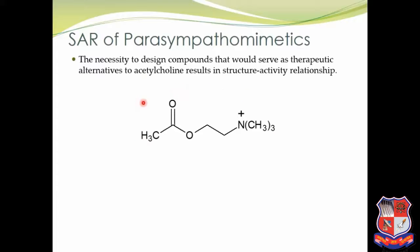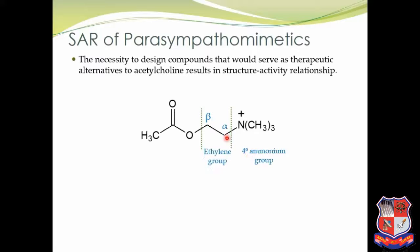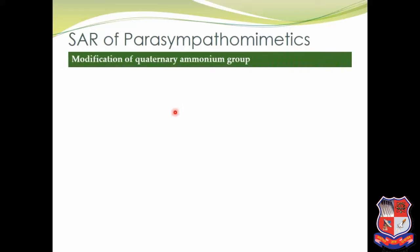This is the structure of Acetylcholine. For understanding the SAR, we will divide the structure of Acetylcholine into three parts. First, we will assign alpha and beta carbons. The first part is the quaternary ammonium group. The next part is CH2CH2, that is called the ethylene group. And the third one is the acyloxy group. First, we will see the modification of the quaternary ammonium group, that is N(CH3)3.